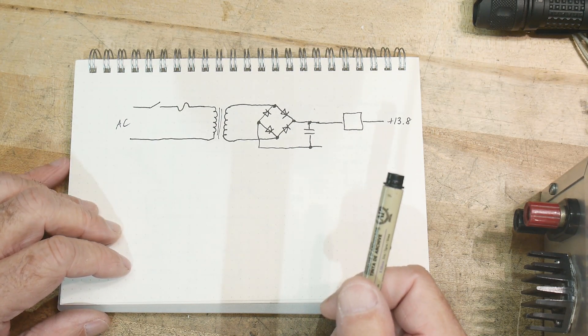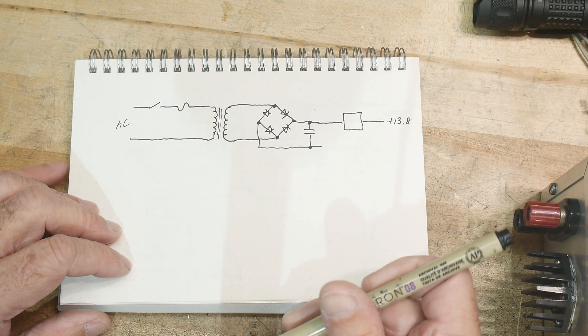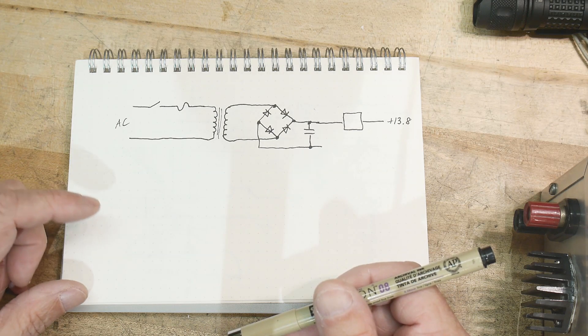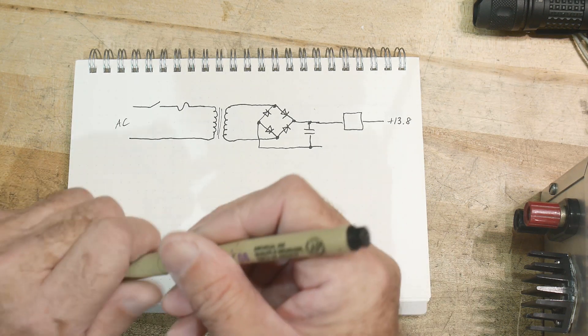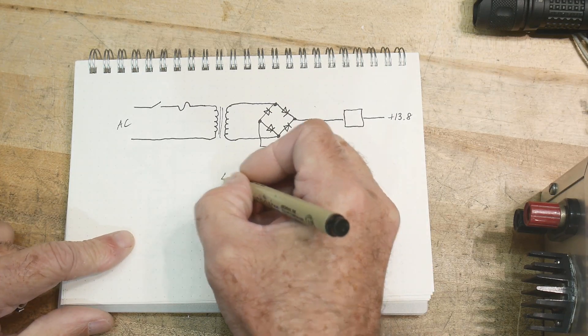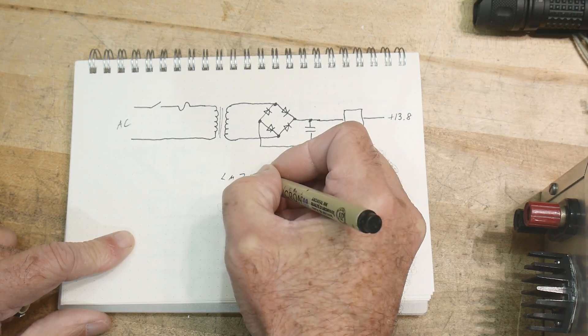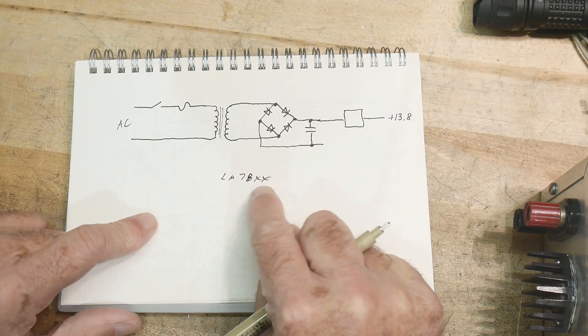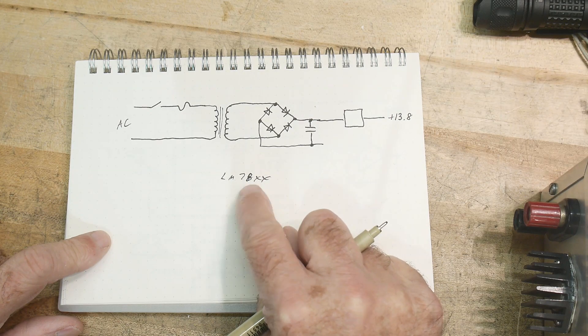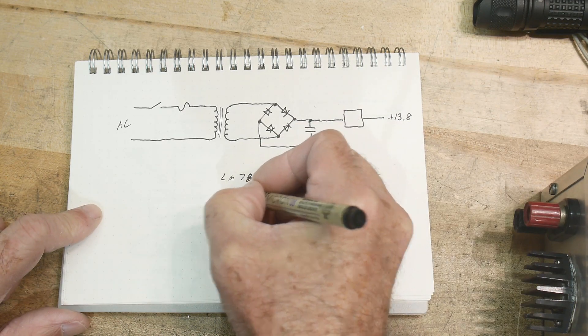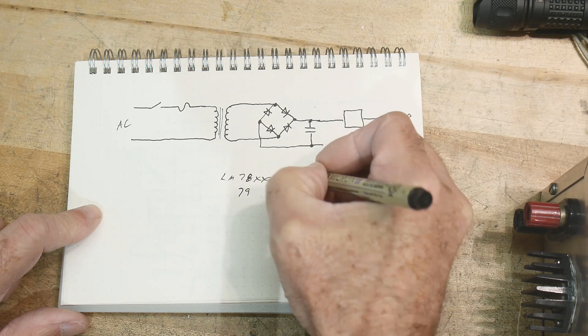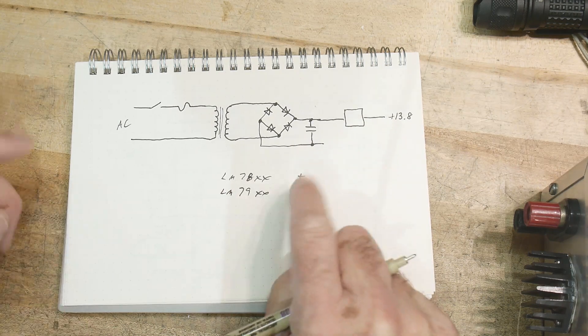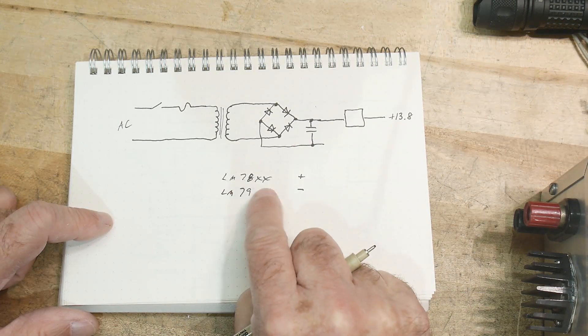So it's like a 78XX. There's a series of, usually they start with 78XX. So a 7805, 7812, and then there's a series of parts that are 79. So these are plus regulators and these are minus regulators. So an LM7905 would be a negative five volt regulator. So 78s and 79s.